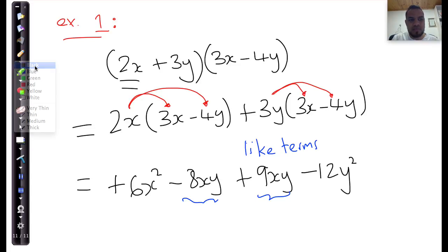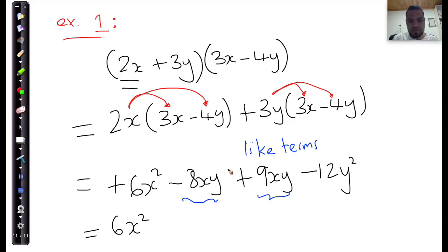And with those like terms, we can now add them. And so we say, okay, this is just equal to 6x squared minus 8xy plus 9xy. It's like minus 8 plus 9. It's going to be positive 1xy, which is just positive xy minus 12y squared. And there you go. That's the first example. We're going to have a few more examples, which we'll add shortly.